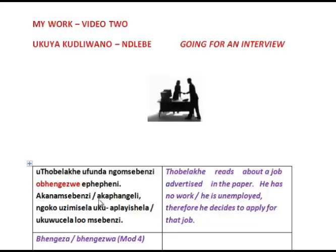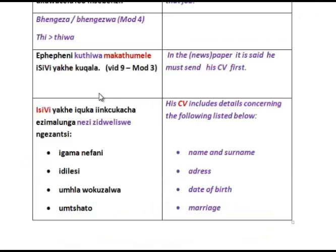'Aka namsebenz, aka pangele gooko uzimisele' — to decide, to apply — 'kotiwa in the paper it is said.' So 'ti' is to say, 'tiwa' is to be said. This will also be explained in module 4. Then 'ma ka tumele' — there we have the verb ending on 'e' because of the use of 'ma,' meaning something should be done. This is explained in video 9 of module 3, covering cases where the verb ends on 'e'.